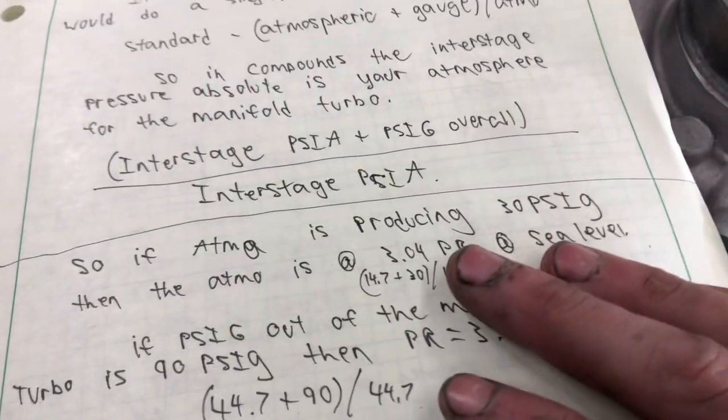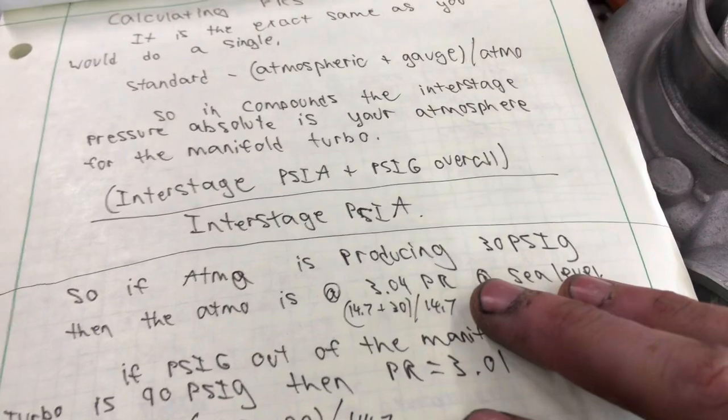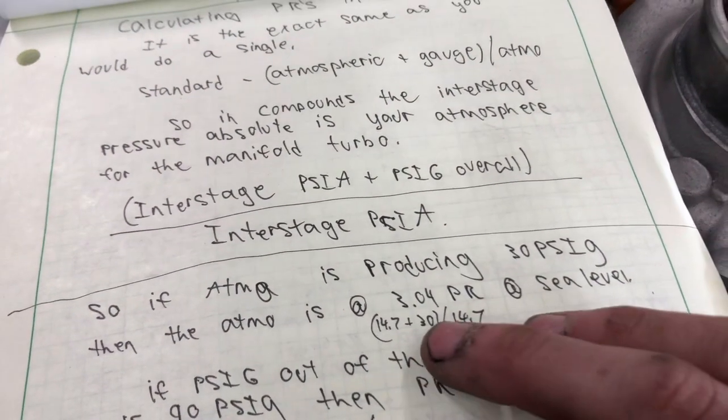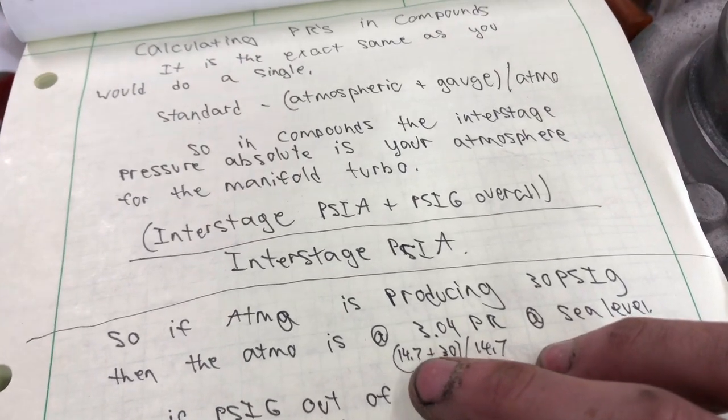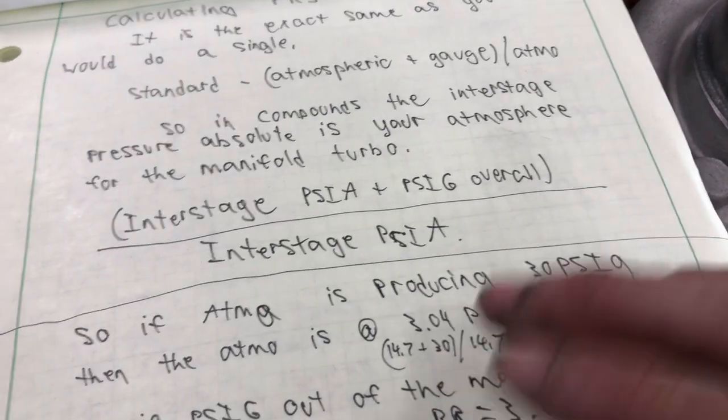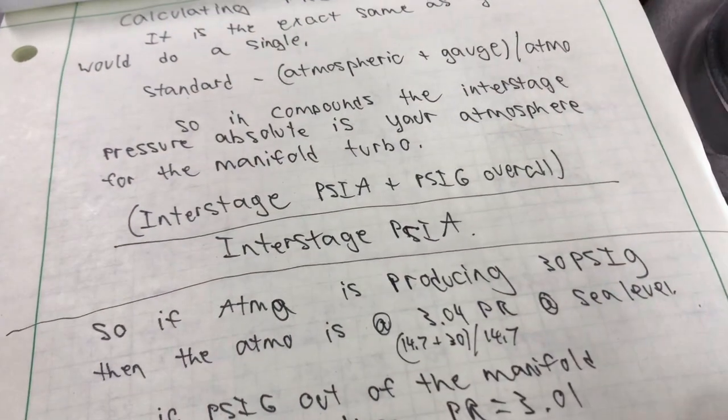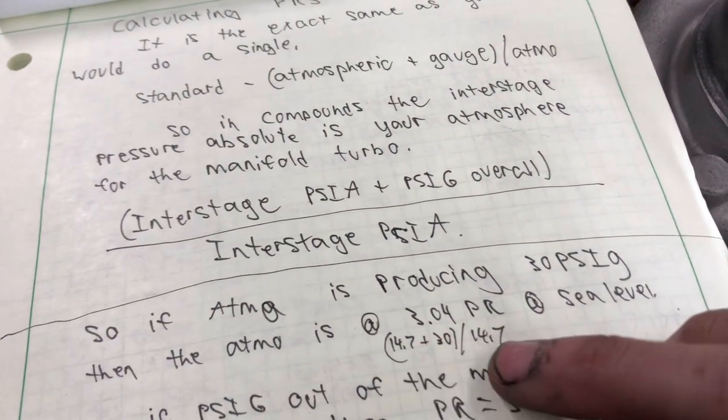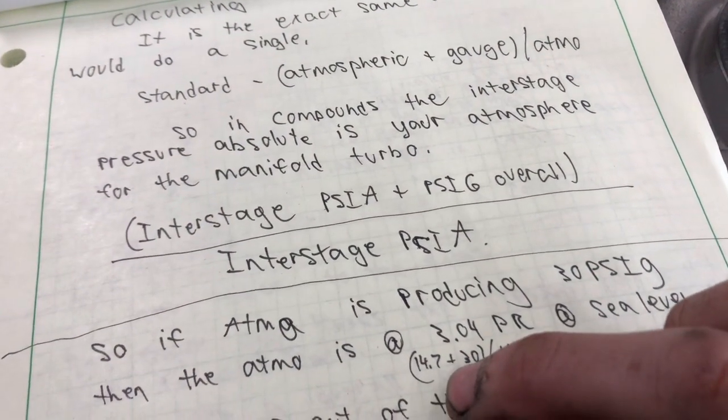So sorry, interstage PSIA, PSI absolute plus PSIG overall, so that's pressure out of the manifold turbocharger divided by interstage PSI absolute. So if the Atmo is producing 30 PSIG in the interstage pipe, then it's 30 plus 14.7 gives you, or sorry, if the Atmo is at a 3.04 pressure ratio at sea level, then the interstage is going to be 30 plus 14.7.